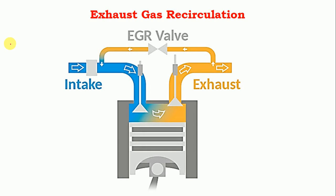Hi friends, welcome back to my new video. Today we are going to discuss about the exhaust gas recirculation system, which is provided in the automobile or IC engine. Generally, the exhaust gas recirculation system is provided for reducing NOx available in the exhaust system. Whenever we want to reduce NOx, only then the exhaust gas recirculation system will be used; otherwise it is not used at all.